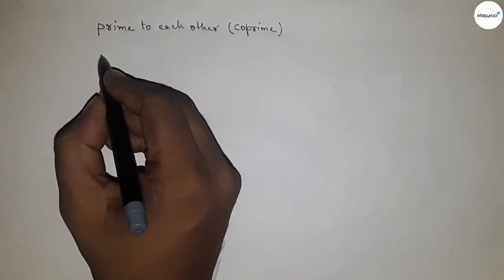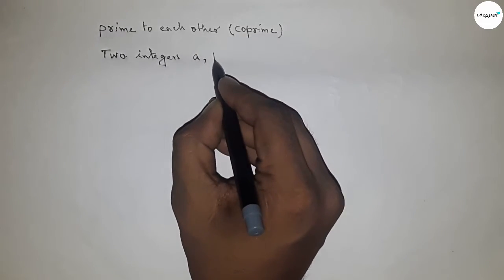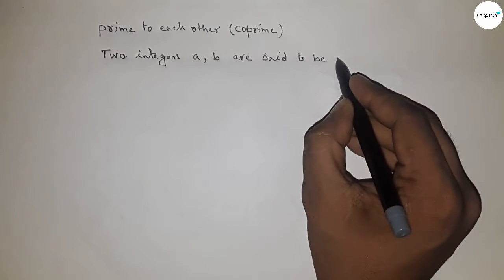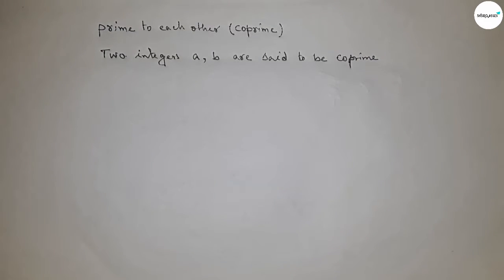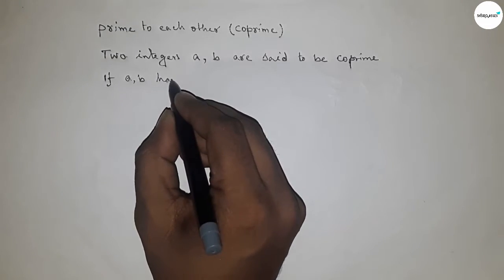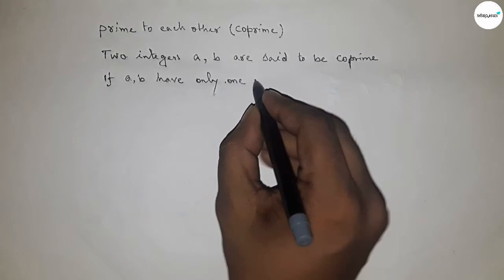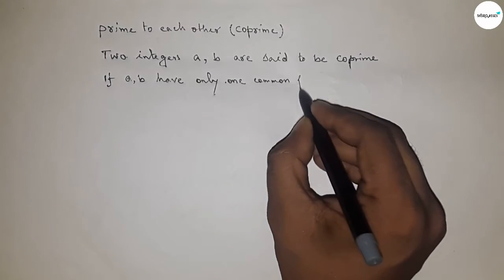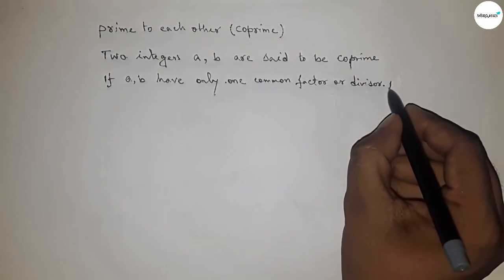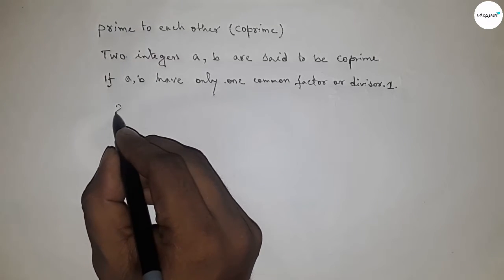Now let us discuss co-prime numbers. Two integers a and b are said to be co-prime, or prime to each other, if they have only one common divisor, and that common divisor is one. Such pairs are called co-prime integers.